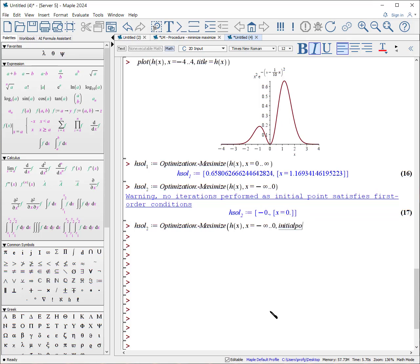initial point equals, and then you have to give it a set because optimization works with multiple dimensions, x equals minus 1, end of curly bracket, close parentheses, and it finds both the location and the actual value.